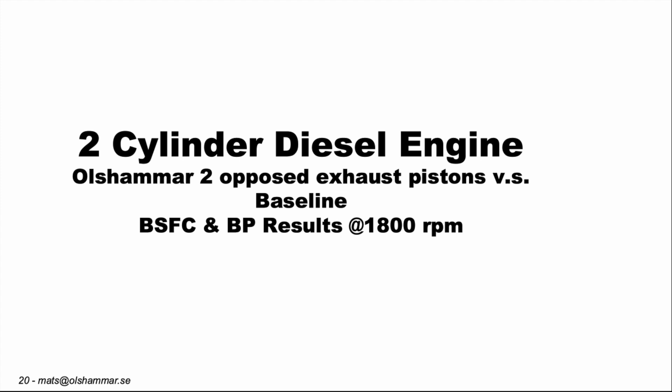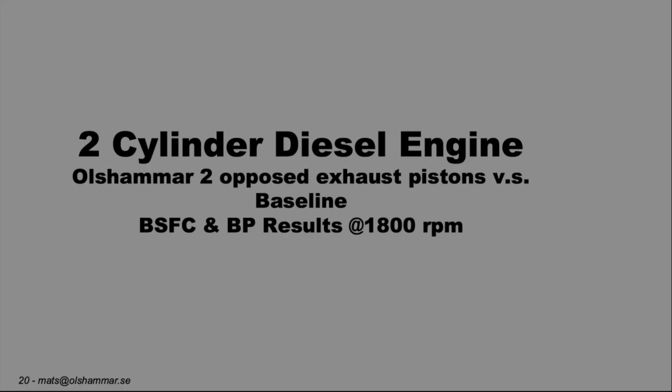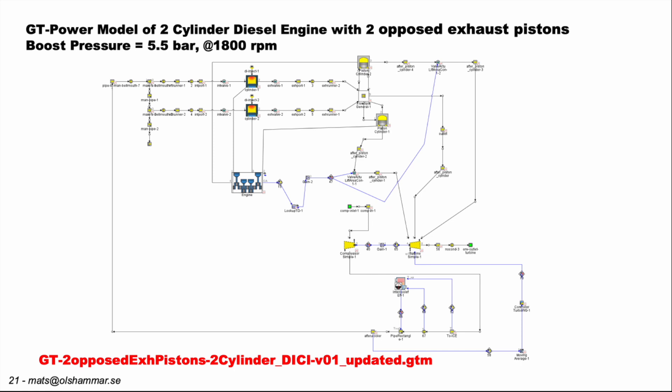We also wanted to test with two opposed exhaust pistons, because we noticed an advantage to having an exhaust piston with a wide bore and a short stroke. So maybe it would be even more advantageous to have two opposed exhaust pistons with a bigger area facing the pressure. We tested this as well, and here you can see the GT Power setup — we have two cylinders or two pistons. It is actually supposed to be one cylinder with two opposed pistons in it, but this is how it looks in the GT Power setup.